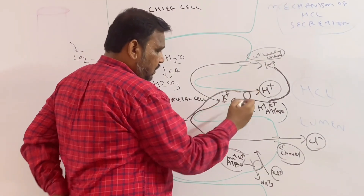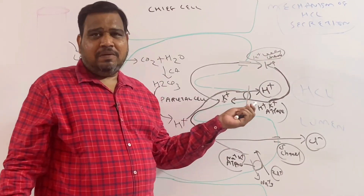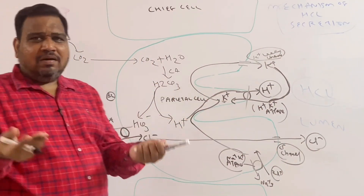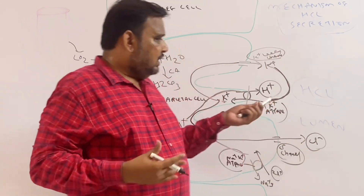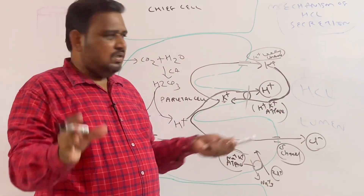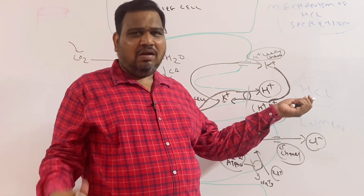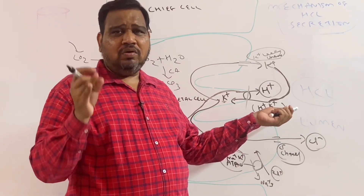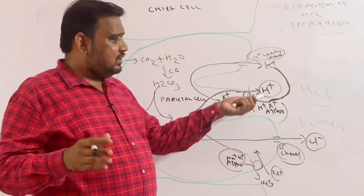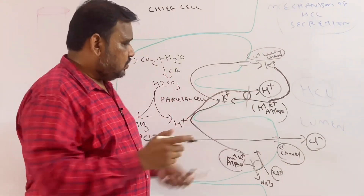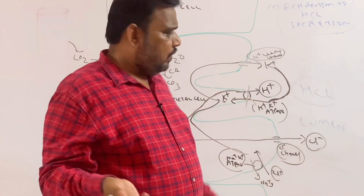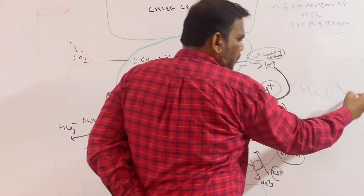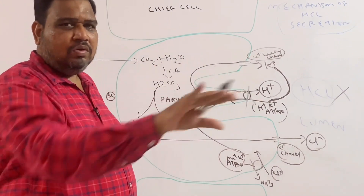If I block H+/K+ ATPase, H+ going out and K+ coming in cannot occur. This is important for treating ulcer problems. If a patient has gastritis or gastric ulcer, one of the main causes is excess acid secretion. To prevent that, there are drugs like Pantoprazole, Omeprazole, Esomeprazole — all called H+/K+ ATPase inhibitors, or proton pump inhibitors. When this pump is blocked, H+ cannot come out, potassium cannot come in, and so HCl will not be secreted into the gastric lumen.